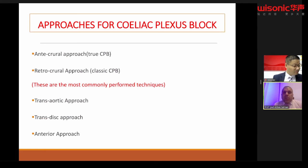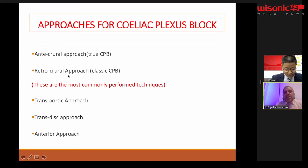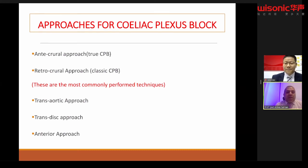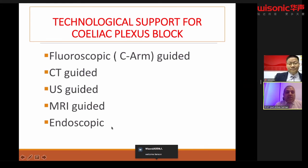We have several approaches to block the celiac plexus. These are: anterocrural — where the neurolytic agent is injected anterior to the crura, a structure related to the diaphragm; retrocrural — injection posterior to the crura. These two are most commonly performed. We also have transaortic, transdiscal, and anterior approaches. For guidance, we have fluoroscopic, CT, ultrasound, MRI, and endoscopic guidance.